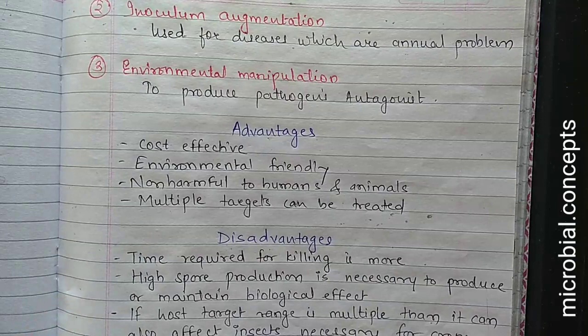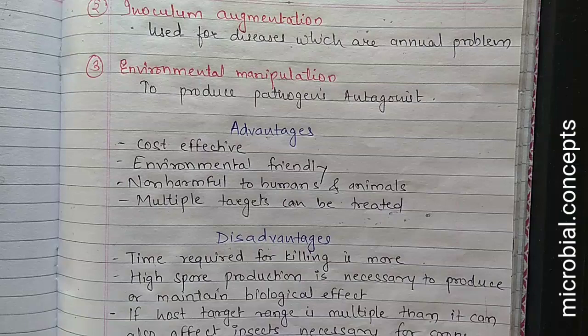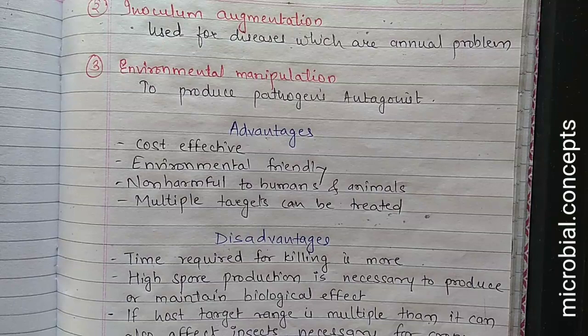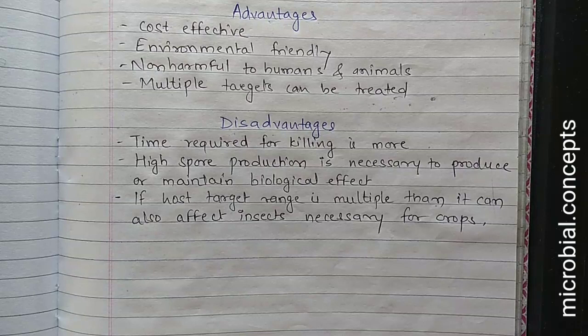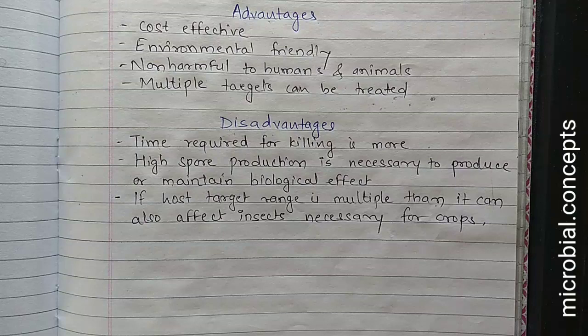Advantages of fungi as a biocontrol agent: they are cost-effective, environmentally friendly, non-harmful to humans and animals, and multiple targets can be treated. Disadvantages include: time required for killing is more — the mode of action is not quick. High spore production is necessary to maintain biological effect. If the host target range is broad, it can also affect beneficial insects necessary for crops, such as pollinators, which may also get killed.